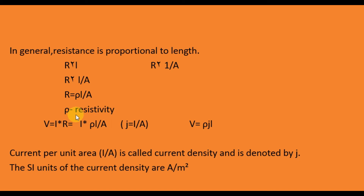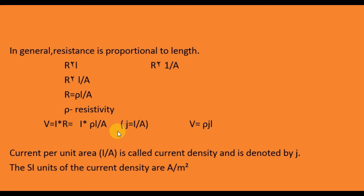To remove the proportionality sign, we introduce the constant rho, giving R = ρL/A, where rho is called the resistivity. From Ohm's law, V = IR. Substituting R = ρL/A, and noting that I/A is defined as J (current density), we get V = ρJL.